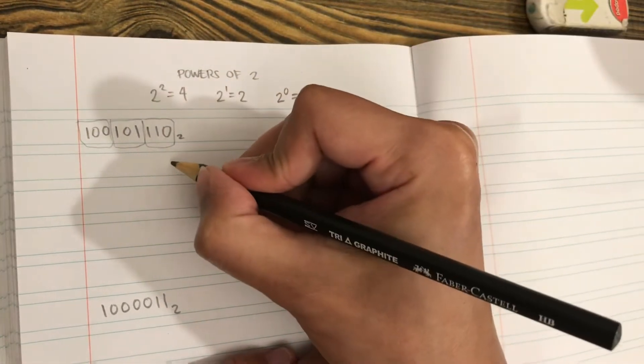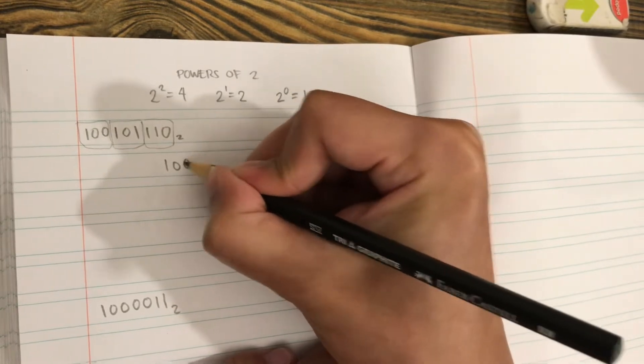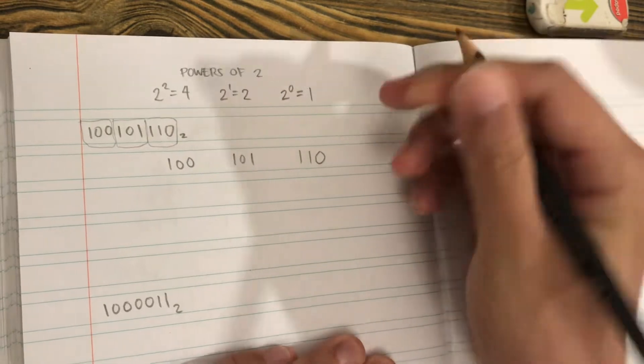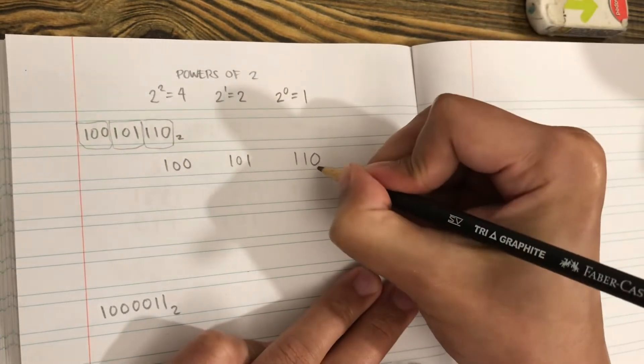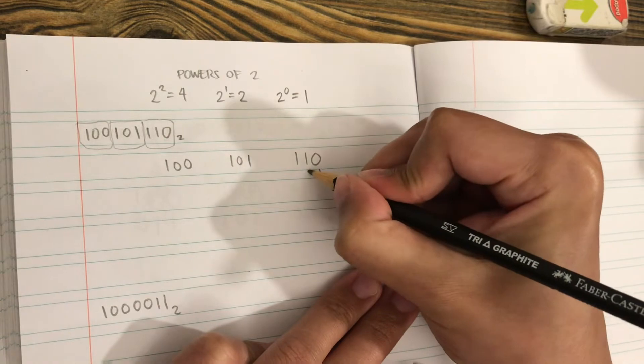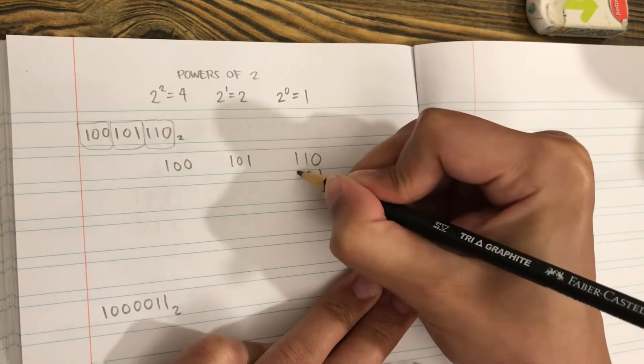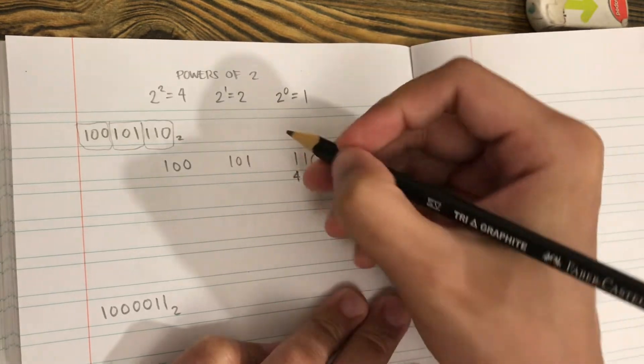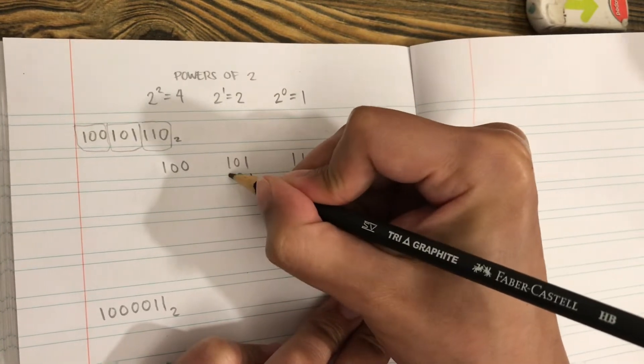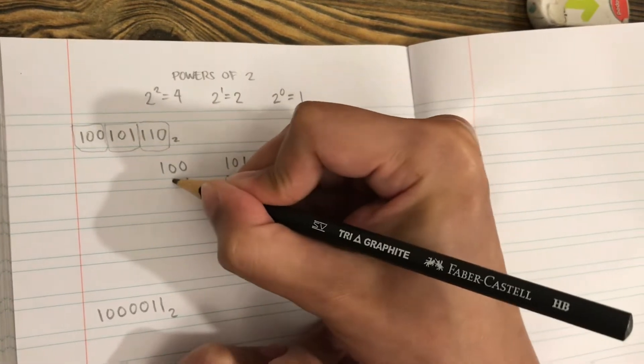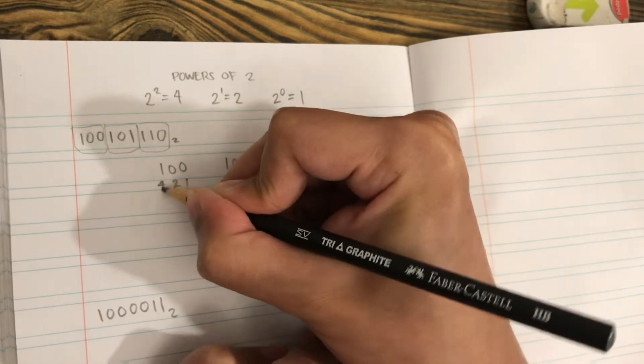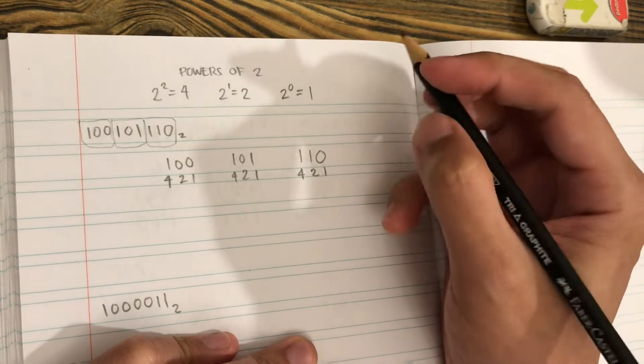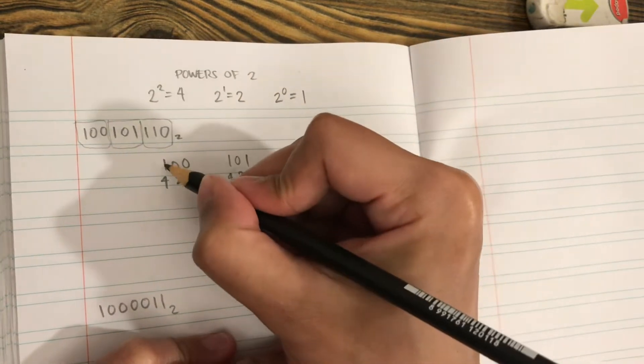Now let's write them down: 101, 110. The first value would be 1, second value would be 2, third value would be 4. We'll do it on the other groups: 1, 2, 4; 1, 2, 4. Then we take the numbers below 1 and ignore the zeros.